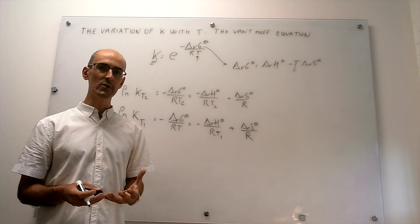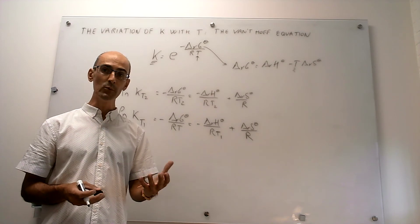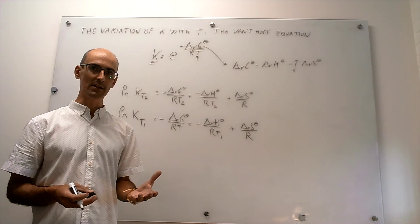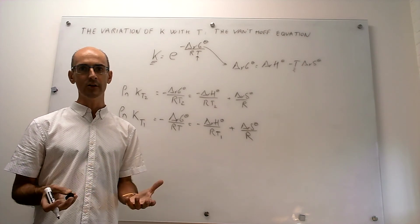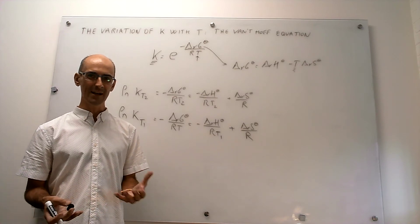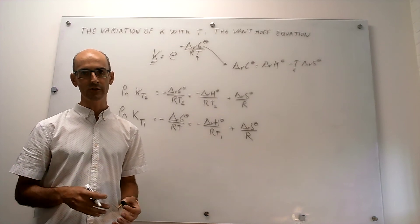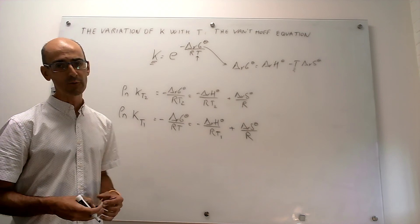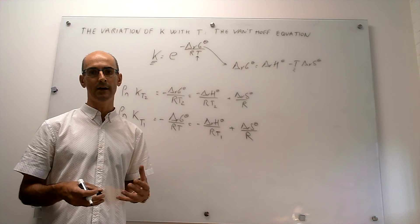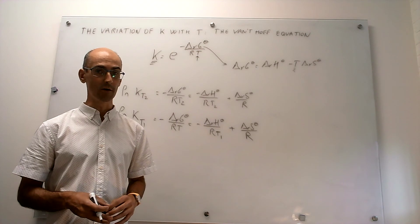For example, if you're interested in knowing how the equilibrium constant for a chemical reaction changes from room temperature, 298 Kelvin, to human physiological temperature, 310 Kelvin, then that variation is only 12 Kelvin. Under those conditions, the reaction enthalpy and the reaction entropy are going to change very little, so this expression will work quite well. However, if you are interested in changes in temperature that are very dramatic, then this approximation won't work very well.